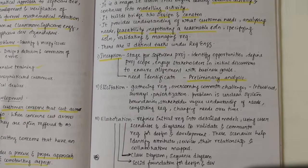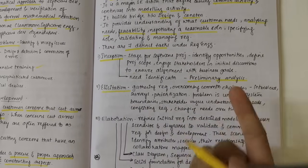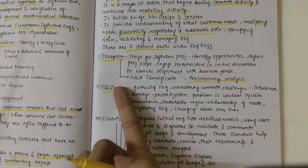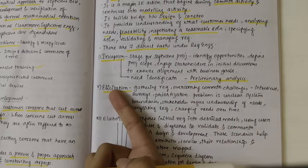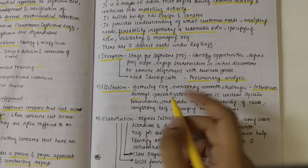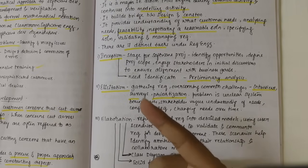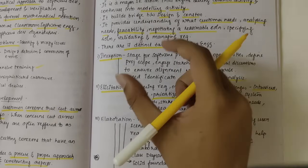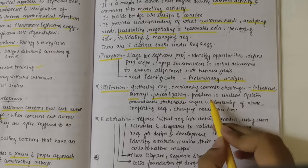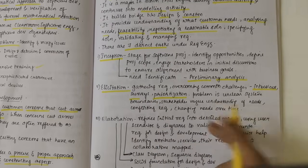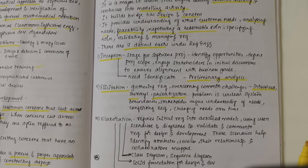After inception — the initial gathering of information and talking to stakeholders — we come to Elicitation. From this vague understanding, we derive something meaningful. We gather requirements, overcoming challenges, through interviews and surveys, and then prioritize them depending on what the stakeholder has told. Prioritization of requirements is done here. Problems include unclear system boundaries, vague understanding of needs, conflicting requirements, and changing needs over time.